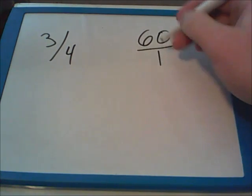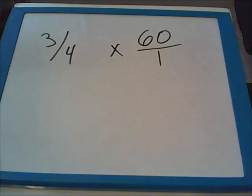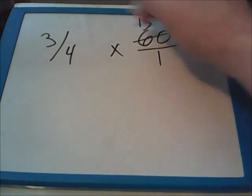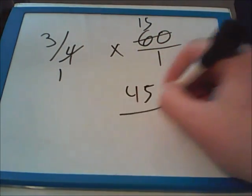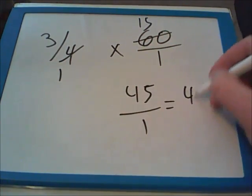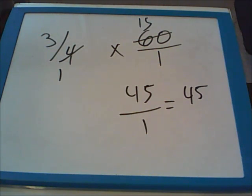So in order to multiply this, I will have to first put 1 under that 60 to turn the whole number into a fraction. Then I will do a little bit of reducing to save myself some headache later, and I end up with 45 over 1, which of course is the same thing as 45. So young Timmy watches trains for 45 minutes a day.